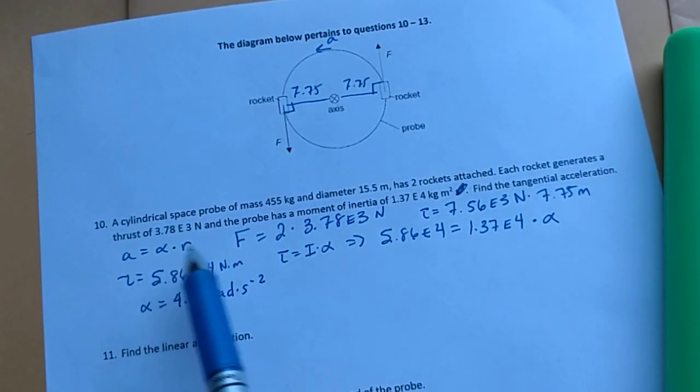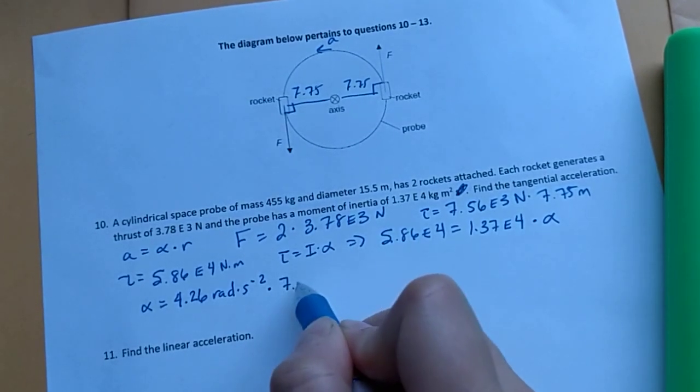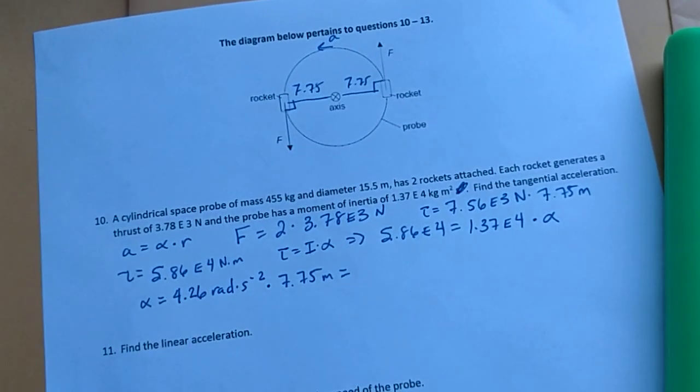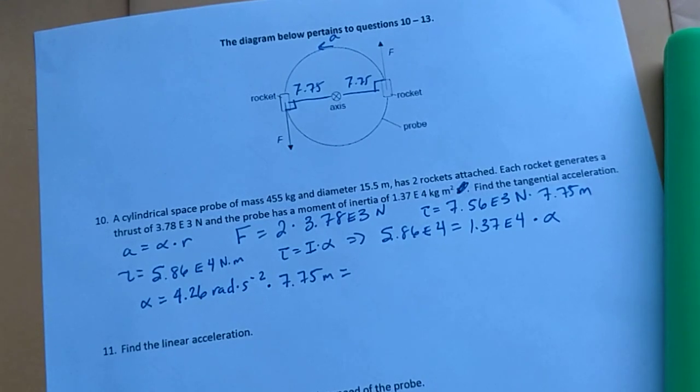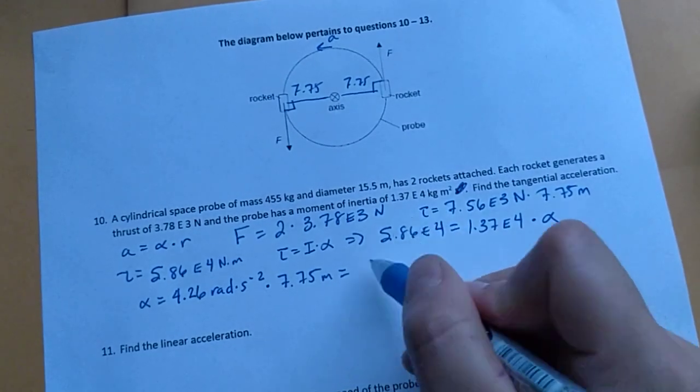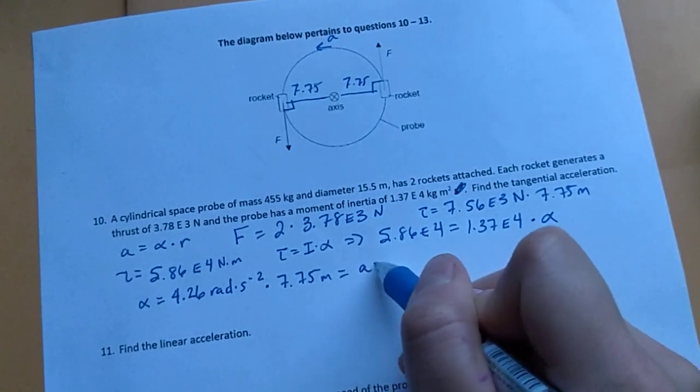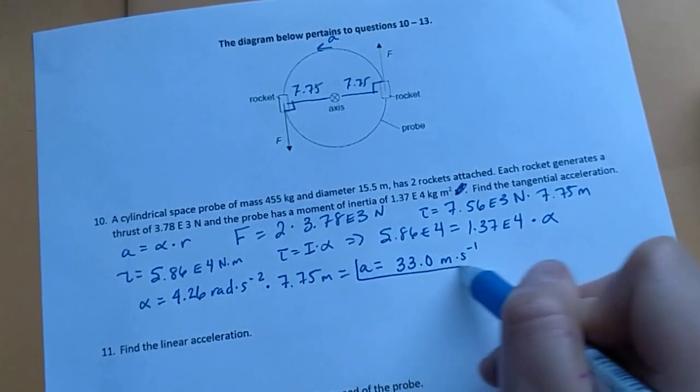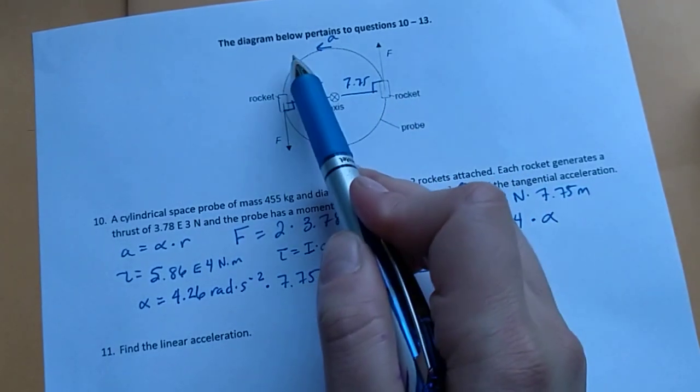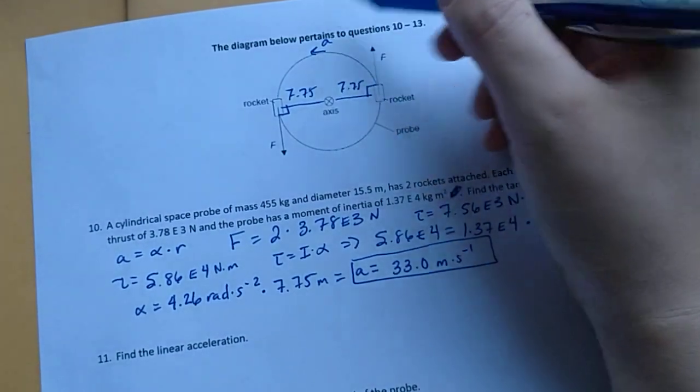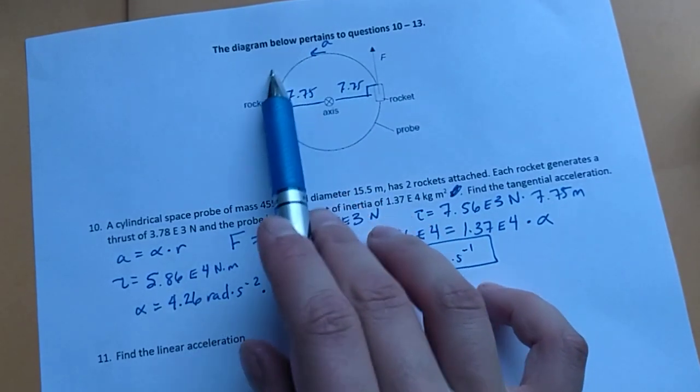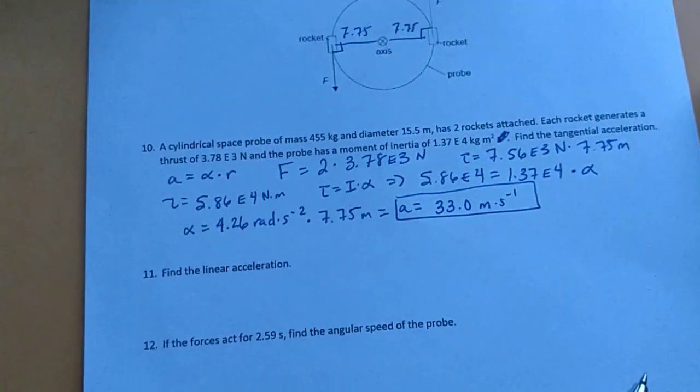And if I want the linear acceleration, I just need to multiply this by the moment arm, 7.75 meters. When I do this, my rads will just fall out because I'm going now from an angle unit to a linear unit. So 4.26 times 7.75, the moment arm. And I get a linear acceleration of 33.0 meters per second. And this acceleration happens just along, if I were to take snapshots of the change in velocity over time just acting along any point on the rotating probe, it would be always tangent to this curve, this rotating curve or rotating probe.